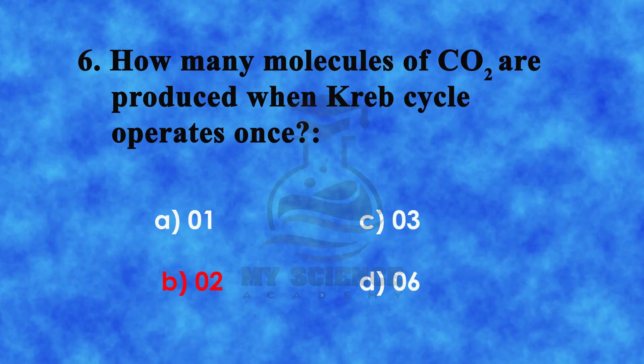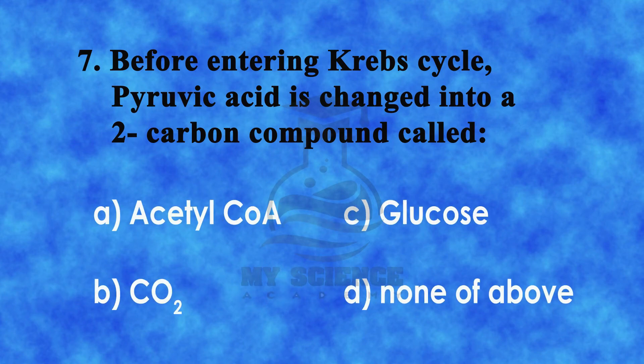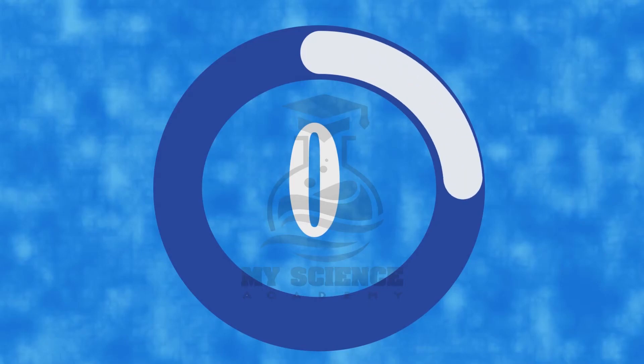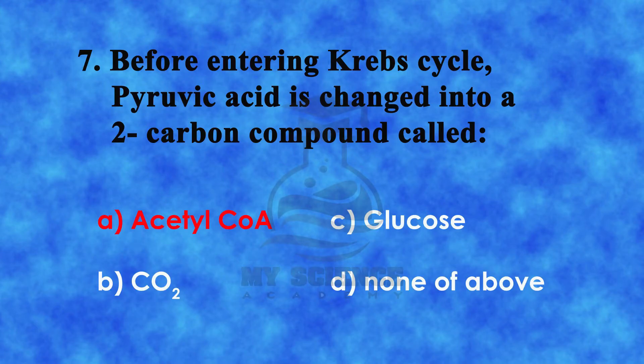Question 7: Before entering Krebs cycle, pyruvic acid is changed into a 2-carbon compound called: a) Acetyl CoA, b) carbon dioxide, c) glucose, or d) none of above. The correct answer is a) Acetyl CoA.